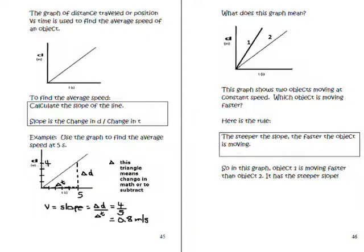So as you can see here we get four units in the y direction and our change in x would be five. So when you see a motion graph and you're asked to find the average speed you simply take the slope of the line. Also the steepness of the slope also means something.